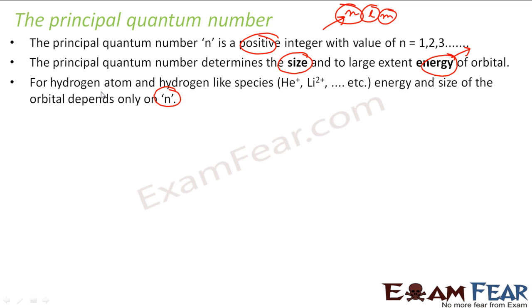For multi-electron systems, energy depends on n plus l, which we will learn now.